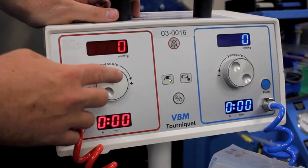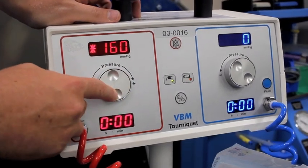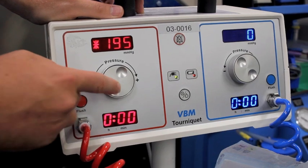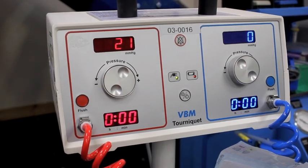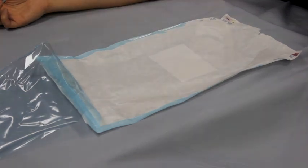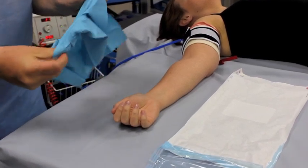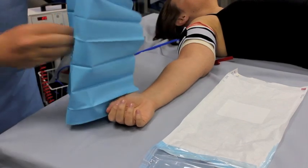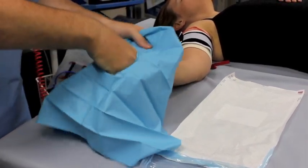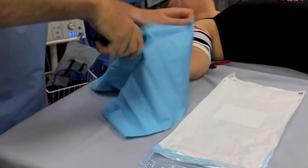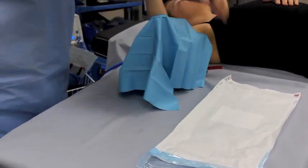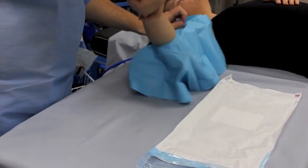Pressure should be set appropriately to inflate the tourniquet cuff according to the patient's preoperative systolic pressure. The final stage before skin preparation is to apply the tourniquet drape. It provides a waterproof barrier which protects the patient from burns associated with skin preparation without creating its own tourniquet.